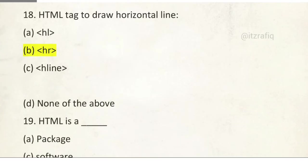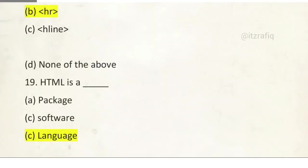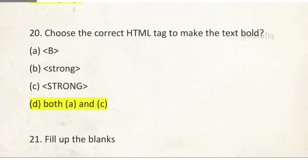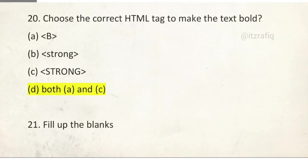Now number 18: HTML tag to draw horizontal line. It is HR. Number 19: HTML is a, correct option is language. Number 20: The correct HTML tag to make the text bold. It will be both A and C. B and strong, both are used to make the text bold. One is physical, one is logical.